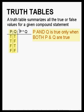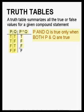We also have a column for what we are trying to show. We are trying to show the table for P and Q — I use the upside-down V for AND. Now we fill in the entries for that last column. When both P and Q are true we get true. When P is true and Q is false we get false. When P is false and Q is true we get false. When both P and Q are false we get false. This is our completed table.